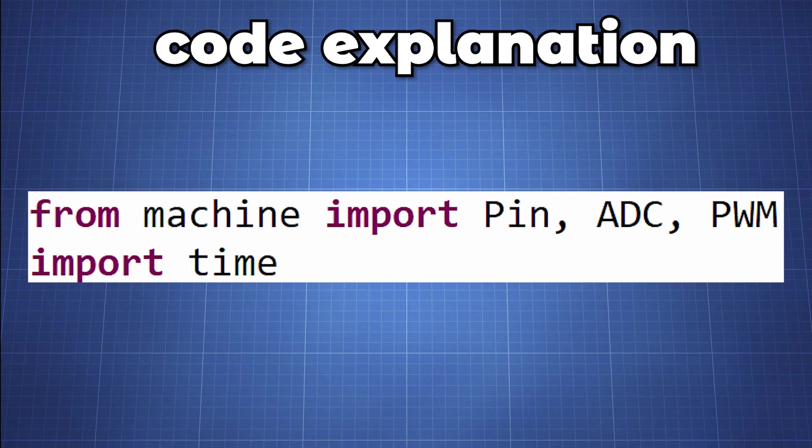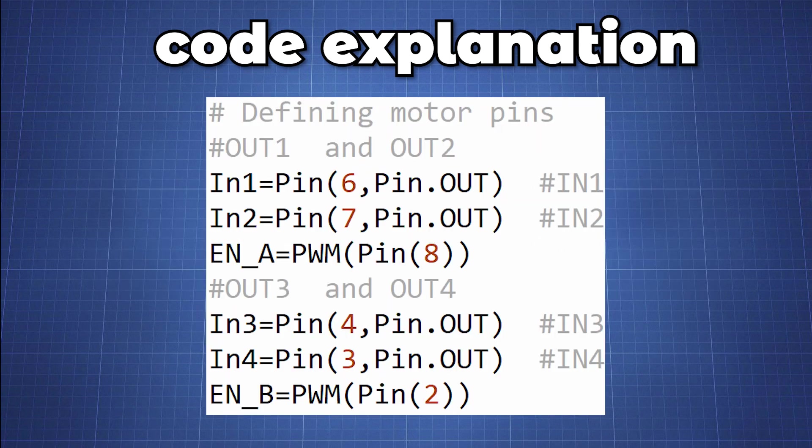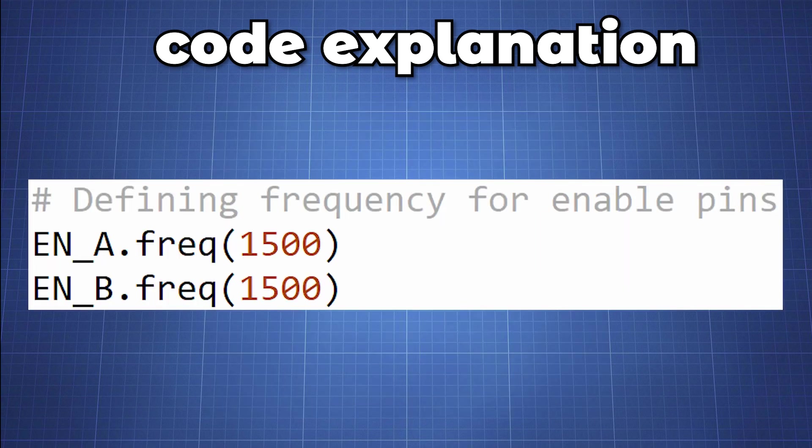We start by importing Pin, ADC and PWM from machine. We then set up pin 27 and 26 as analog inputs for our joystick x and y axis. We define the module input pins but we will set them as PWM for enable A and B. For the frequency of the PWM we will set it to 1500 hertz.